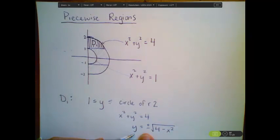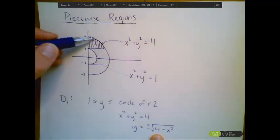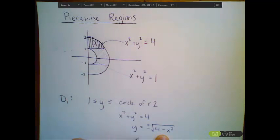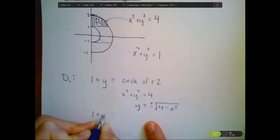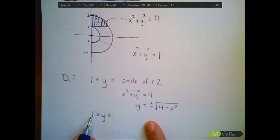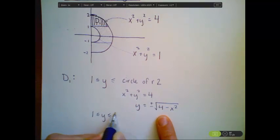And we want the positive values because we're up here in the positive quadrant. So that means that our bounds on y are going to be given by y between 1 and square root of 4 minus x squared.